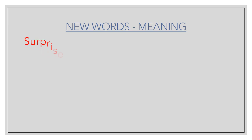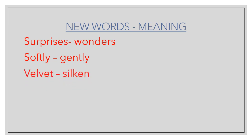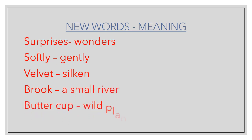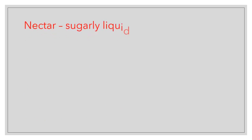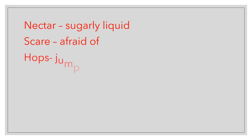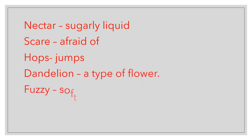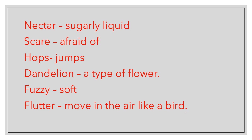New words and meanings: surprises — wonders; softly — gently; velvet — silken; brook — a small river or water body; buttercup — a wild plant with bright yellow cup-shaped flower; nectar — sugary liquid; scared — afraid; hops — jumps; dandelion — a type of flower; fuzzy — soft; flutter — move in the air like a bird.